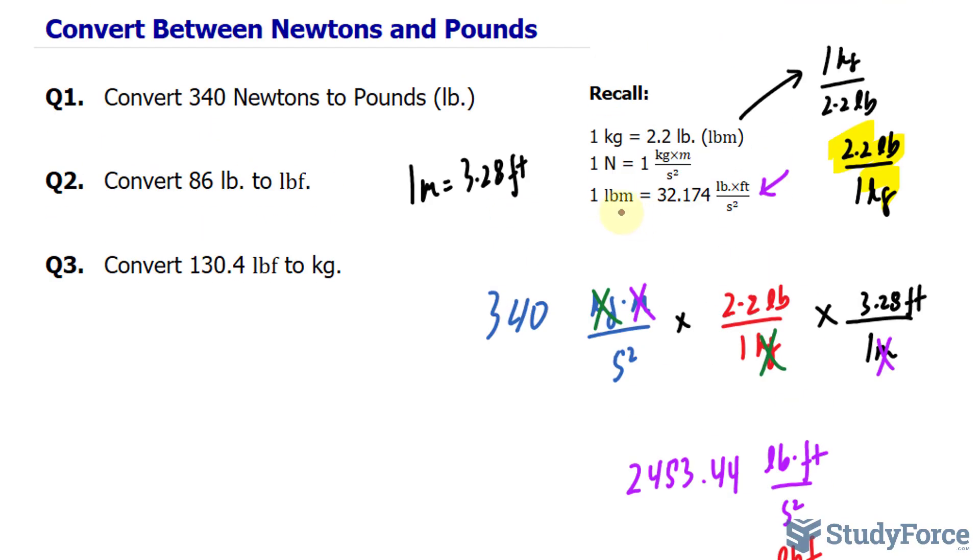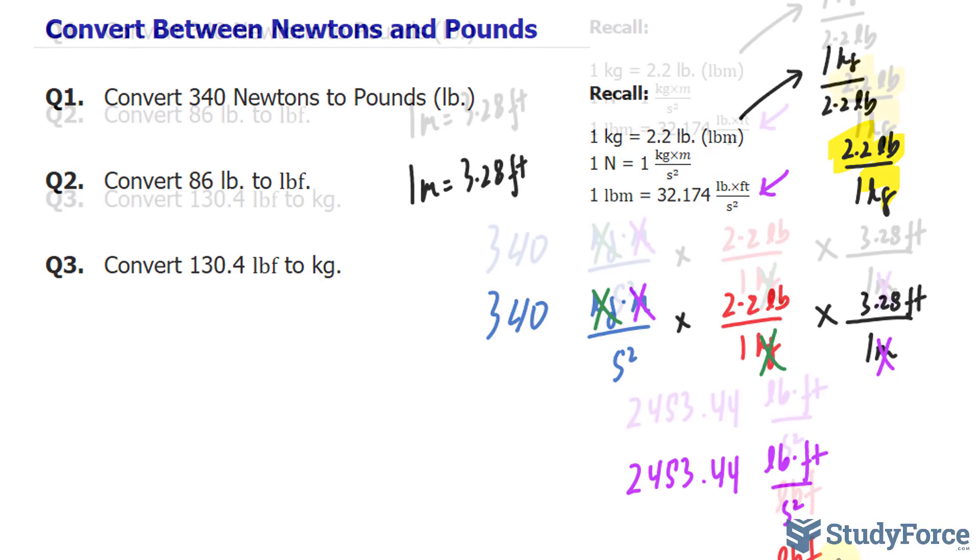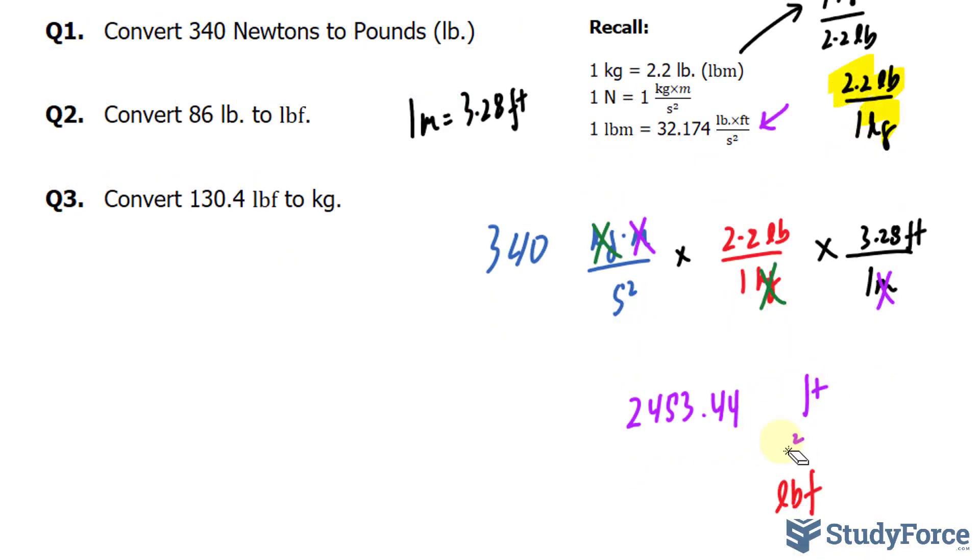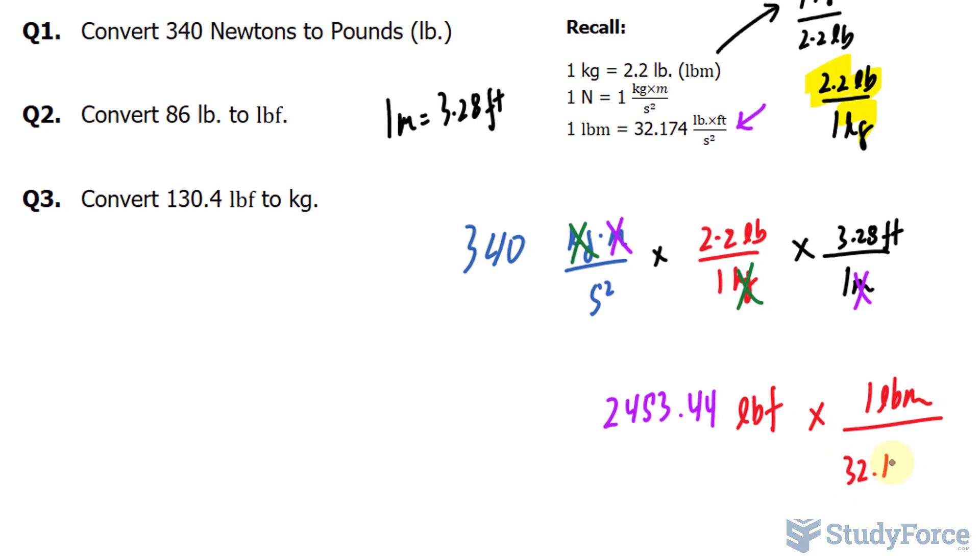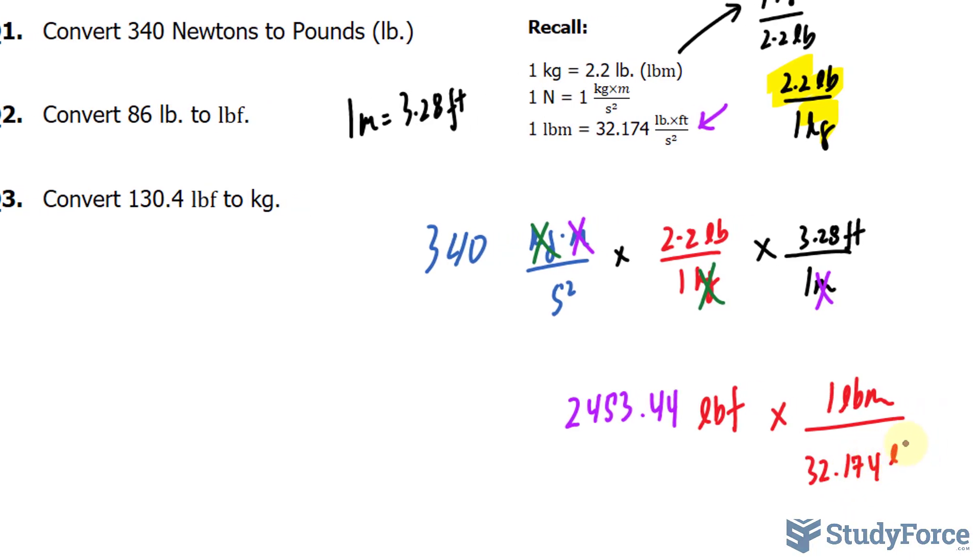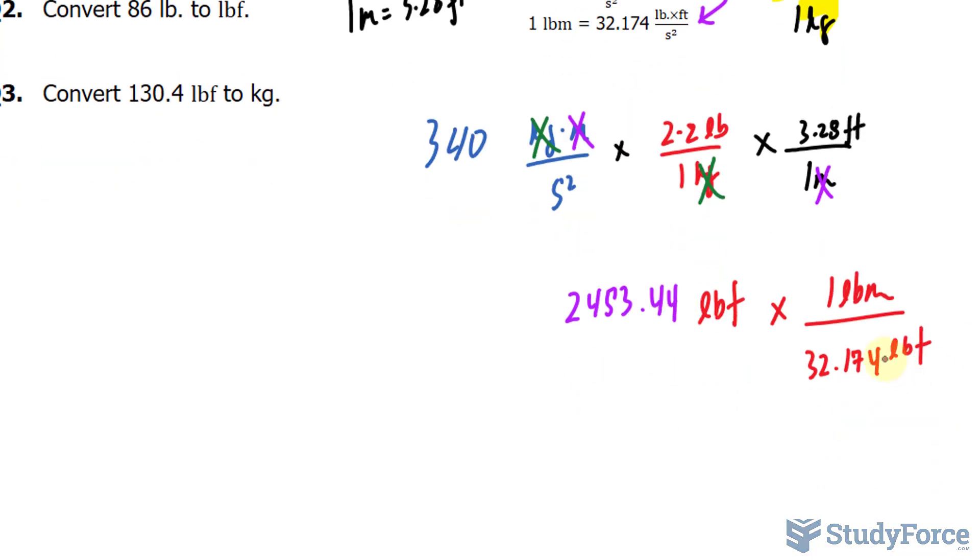We'll use this conversion ratio to convert LBF into LBM. So let me just replace this with LBF. And using that last conversion ratio, I'll multiply this by 1 LBM, or pound, that's what we're looking for at the top, and 32.174 LBF. Or you can write down LB times foot per second squared, but this is easier.